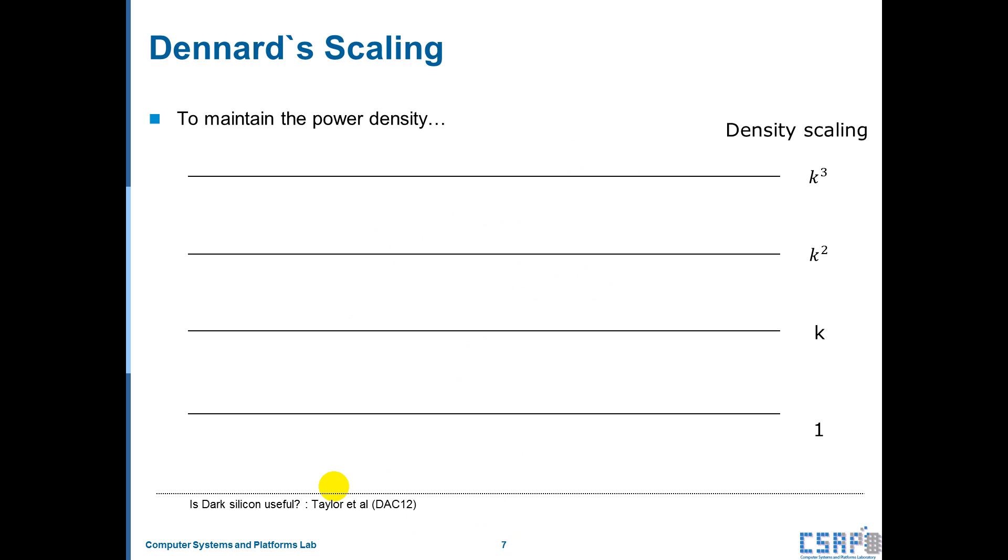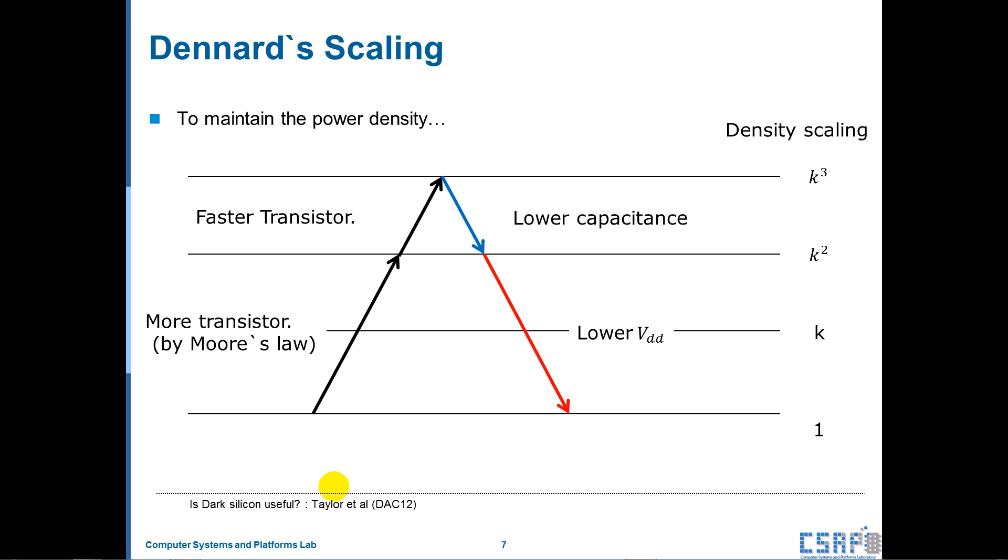Here is the simple example. To maintain the power density, while we increase the number of transistors by Moore's law and speed, the transistor should have a lower capacitance and voltage. But, as I mentioned right before, the relationship is broken, and the thickness of oxide is no longer decreased.